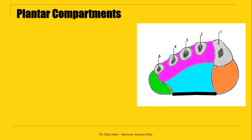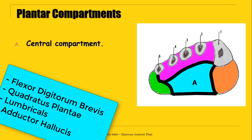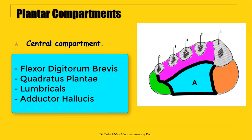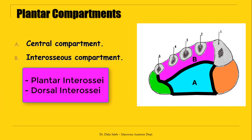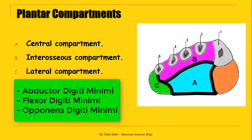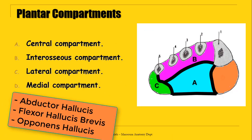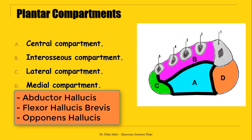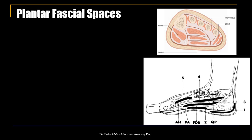The plantar aponeurosis sends two septa towards the undersurface of the first and fifth metatarsals — the medial intermuscular septum and the lateral intermuscular septum. Together with interosseous septal fascia, this divides the plantar surface of the foot into compartments: the central compartment, containing the muscles that form the layers of the foot at the central region; the interosseous compartment, divided into four sub-compartments each containing plantar and dorsal interosseous muscles; the lateral compartment, containing the intrinsic muscles of the little toe; and the medial compartment, containing the intrinsic muscles of the big toe.